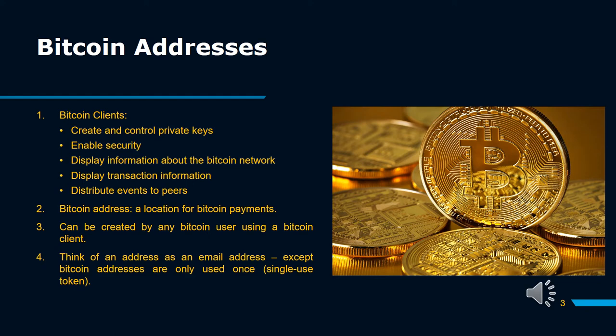Bitcoin Address: it is basically a location for Bitcoin payments. A Bitcoin address is a unique identifier that serves as a virtual location where the cryptocurrency can be sent. People can send the cryptocurrency to Bitcoin addresses similarly to the way fiat currencies can often be sent to email addresses. However, the Bitcoin address is not intended to be permanent, but just a token for use in a single transaction.